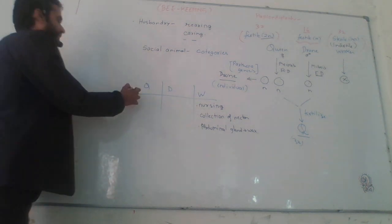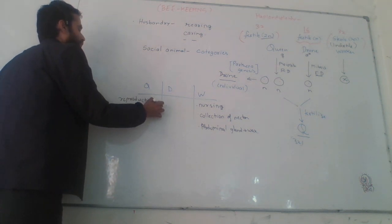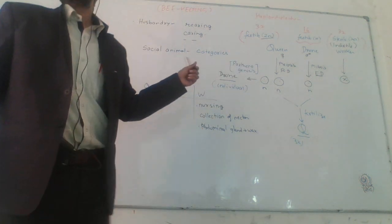Queen, the main function is reproduction. Up to 2000 eggs it can produce in a single reproduction.